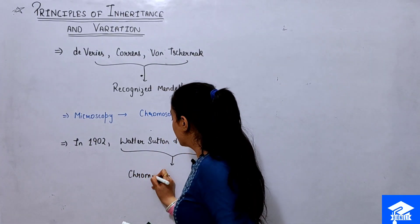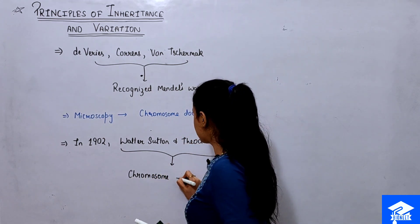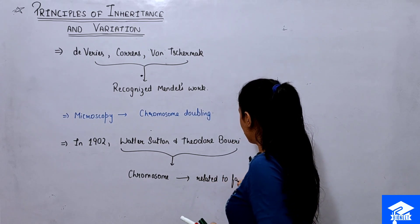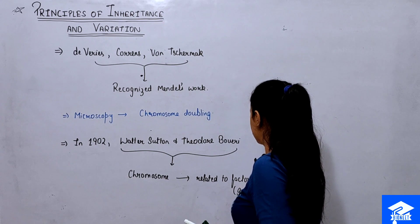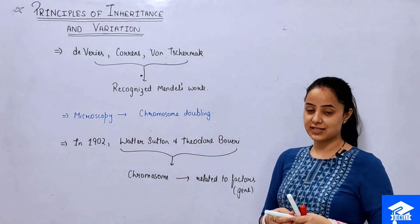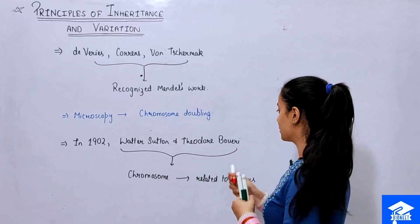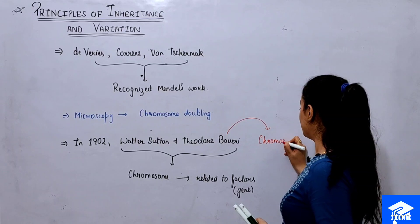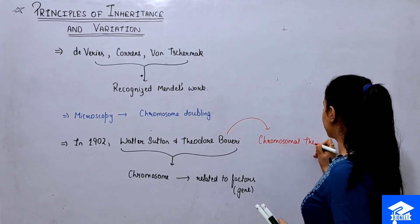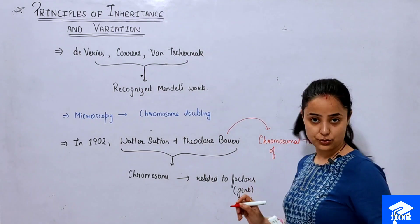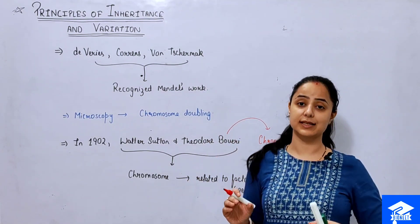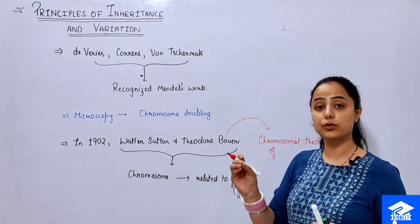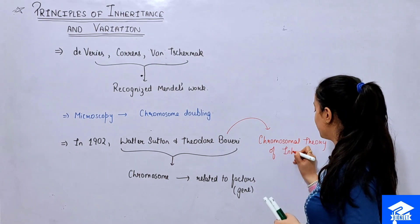These two researchers understood that genes — the factors Mendel described — are present on chromosomes. They formalized this into a theory called the Chromosomal Theory of Inheritance, which states that the genetic factors are located on chromosomes and that chromosomal movement during cell division corresponds to the genetic patterns described by Mendelian genetics.